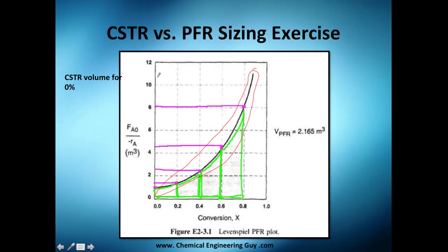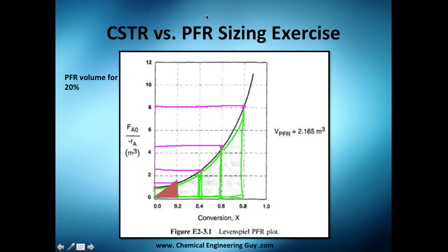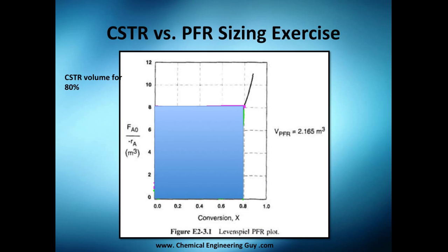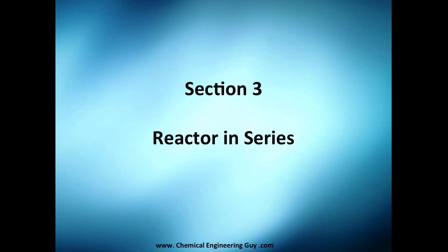Be aware: if you have a different shape of rate of reaction — for example one that looks like this — you could have lower volumes for the CSTR and higher volumes for the PFR, but that is not the case here. I just wanted to show how the area under the curve is smaller than the rectangle for the CSTR. We are done with section two, and we'll continue with section three, which covers reactors placed in series — very cool. See you in that video!